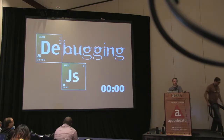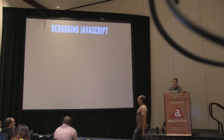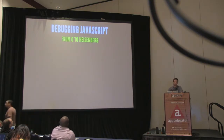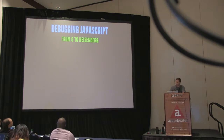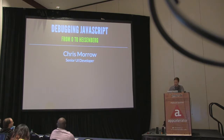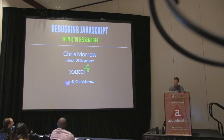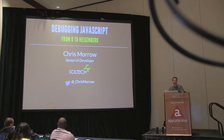This is Debugging JavaScript. The goal of this talk was originally to take everyone from zero to hero, but since code sometimes breaks very badly, I went with a Breaking Bad theme — zero to Heisenberg. My name is Chris Morrow, I'm a senior UI developer working in Atlanta at a company called Soltech in the Buckhead area. I'll post slides on Twitter and share updates I made last minute.